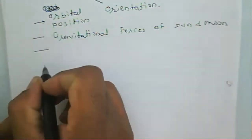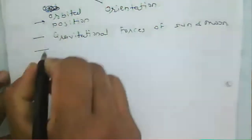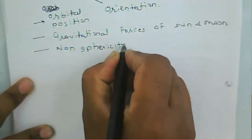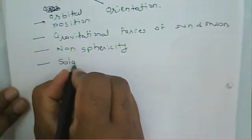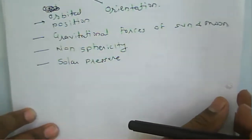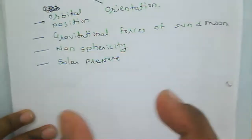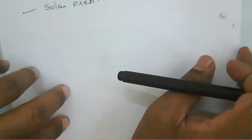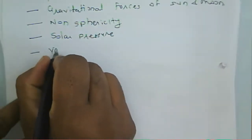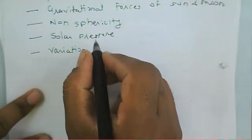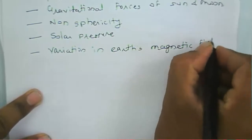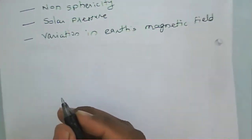Due to non-sphericity of the Earth, there are irregularities in gravitational forces, which change the orbital position. Another cause is solar pressure: because the satellite has solar panels and an antenna, solar pressure on these components changes the orbital position. There may also be variation in the Earth's magnetic field, which causes changes in satellite position.